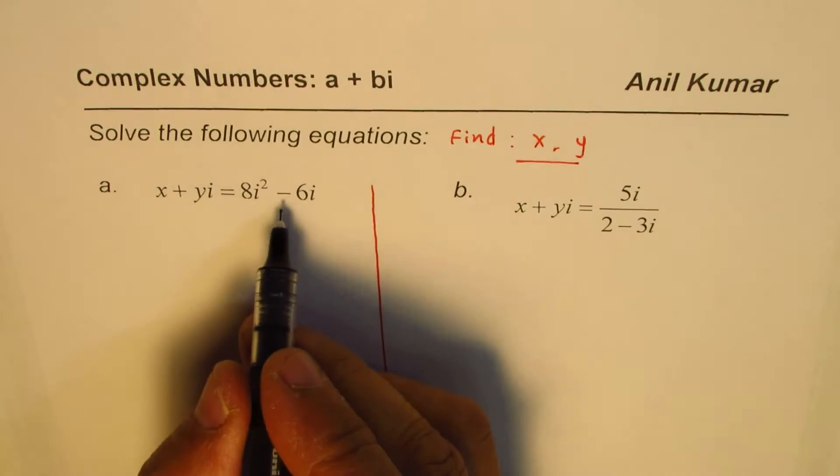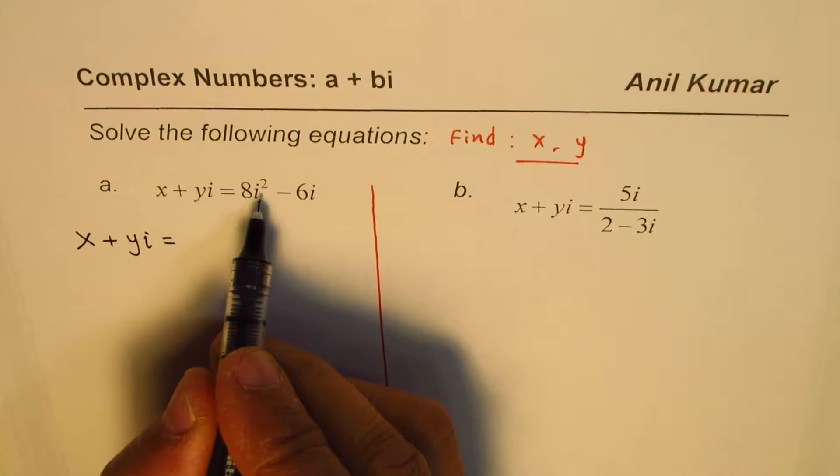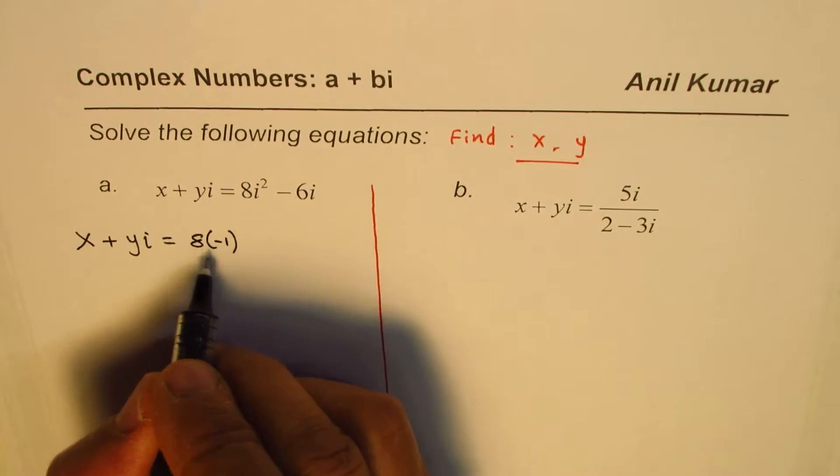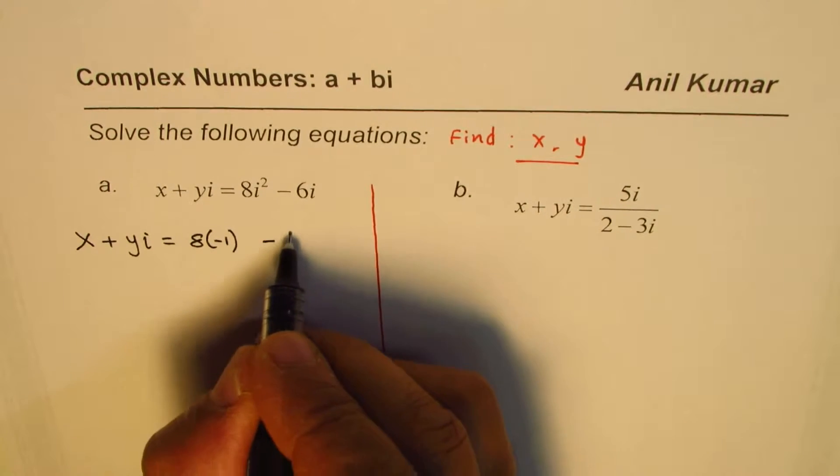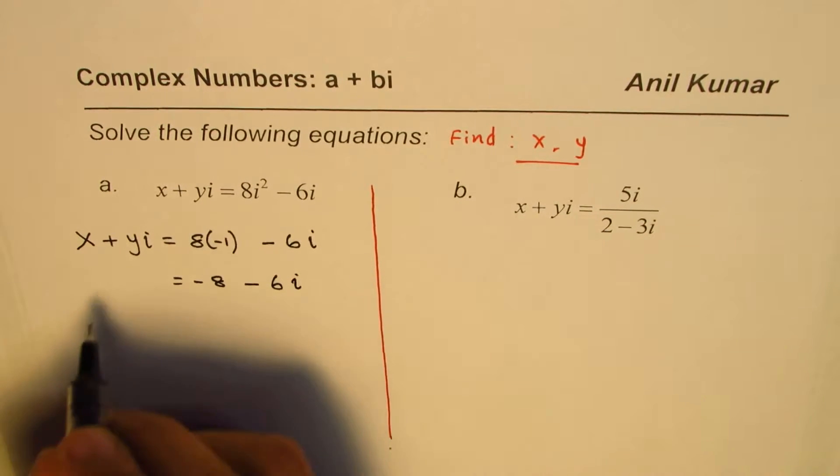Let us begin with the left one. We are given x plus yi equals 8i squared. Now i squared is minus 1, so I could write this as 8 times minus 1 minus 6i. That gives us minus 8 minus 6i.